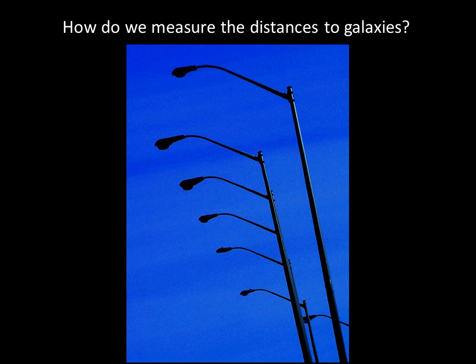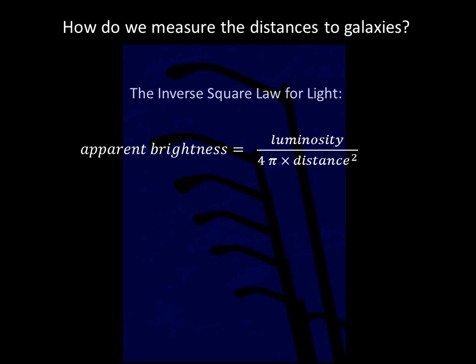Once we have measured distances to nearby stars using parallax, we can begin to measure distances to other stars in the same way that we might estimate the distance to a street lamp at night. If the street lamp does not look very bright, it's probably far away; if it looks bright, it's probably close. We can measure the apparent brightness of a street lamp, and if we know how intrinsically bright each lamp is — say, 1000 watts — we can use the inverse square law to calculate the distance.